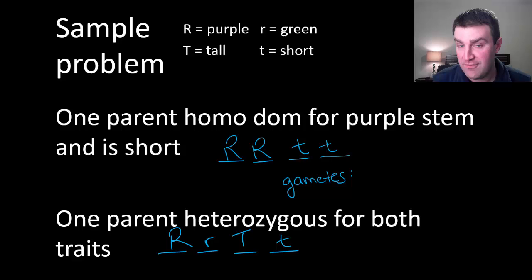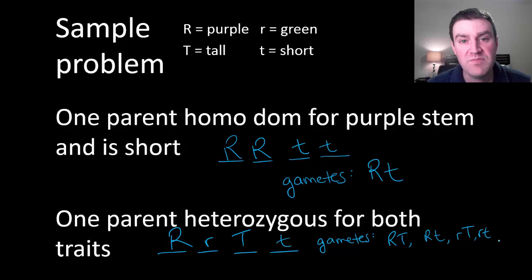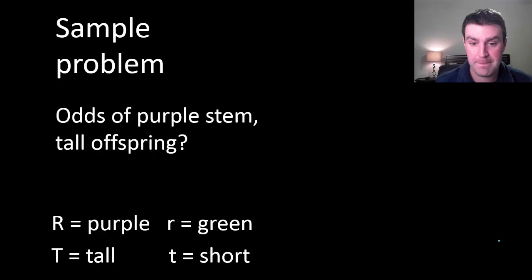Let's think about the gametes that these parents can make. Remember that gametes need half of what you start with and one of each letter. So in this case we need some kind of R and some kind of T. So this parent can only pass on a big R and a little t whereas this parent can really pass on all four possibilities. Big and big, big and small, small and big, and small and small.